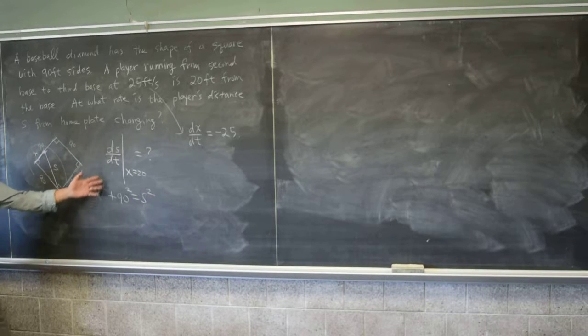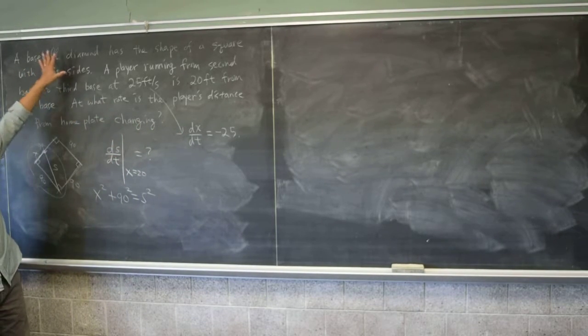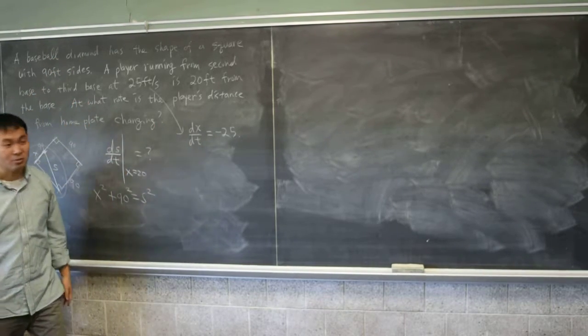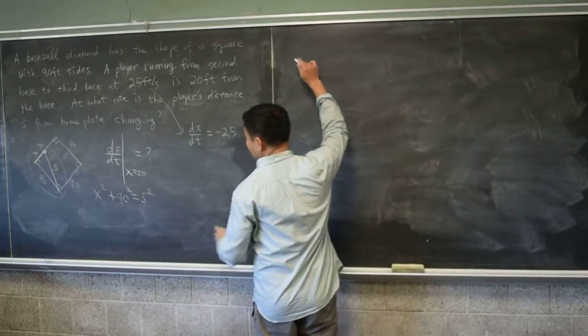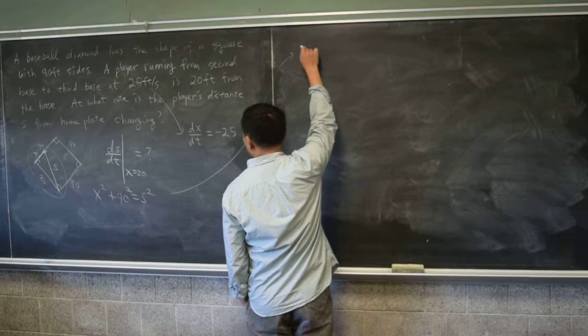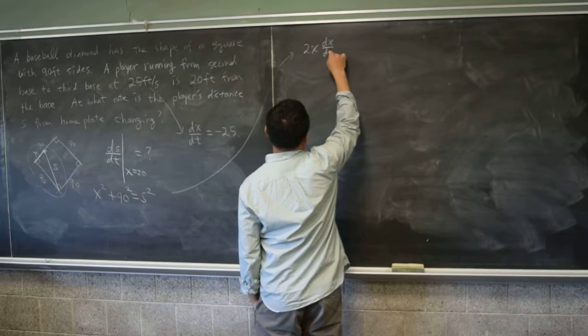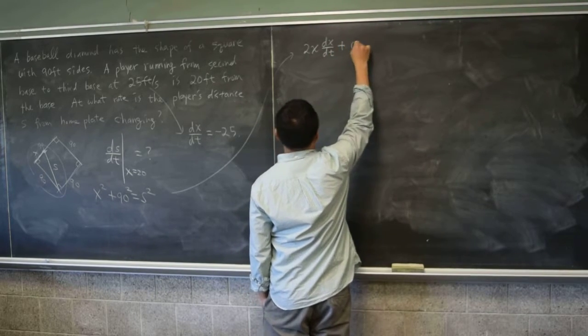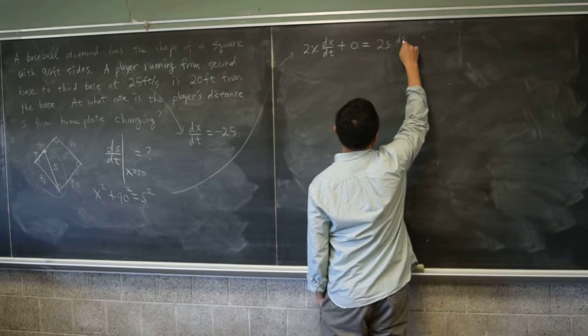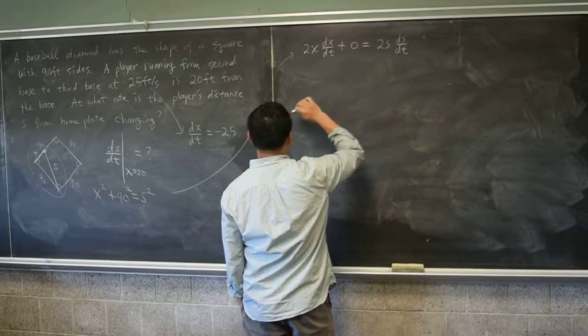Okay. So this actually translates all the word problem here into a few equations, right? Now we can just solve it. How do we solve it? Differentiate. So tell me what you get if you differentiate. 2x. 2x dx/dt. 2x dx/dt plus 0. 2s ds/dt. And we're looking for ds/dt. And then you're looking for ds/dt.